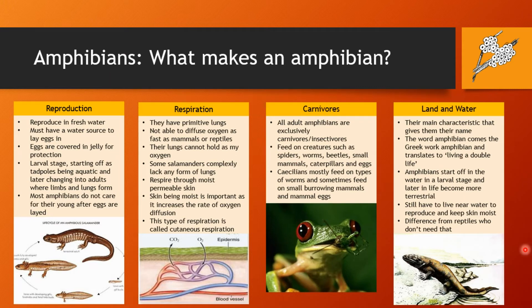So what makes an amphibian? One of the most key characteristics unique to their vertebrate group is their reproduction methods. Most amphibians reproduce in fresh water — they must lay their eggs in water so they don't dry out. Their eggs are covered in a jelly-like substance used for protection against predators. Most species go through a larval stage, the classic tadpole-to-adult stage. Earlier in life they are fully aquatic, and eventually their lungs and limbs start to develop as they move towards being a land-based creature.